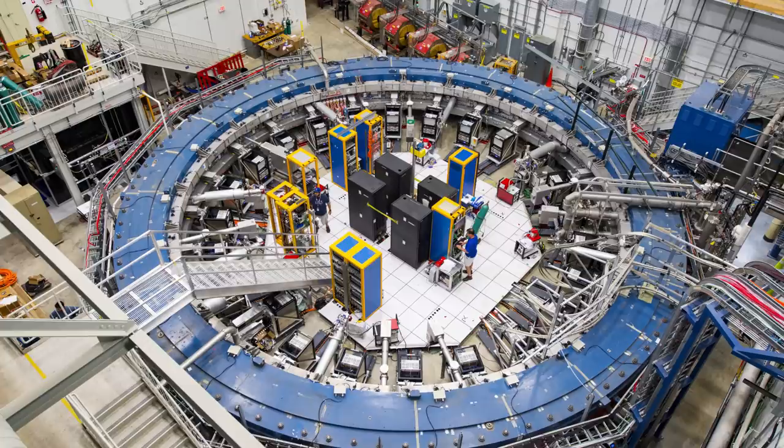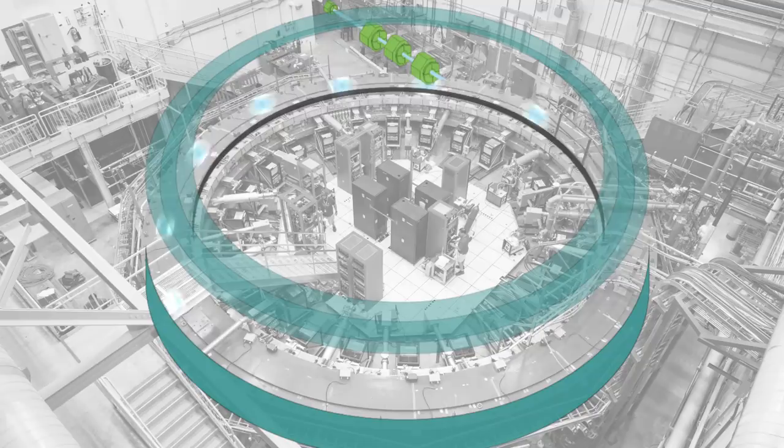That's where Fermilab's muon g-2 experiment comes in. The muon g-2 experiment involves taking muons and we put them inside a big magnet where we store them and send them around and around. While they're in there, we measure the frequency at which their spin rotates within the magnetic field.